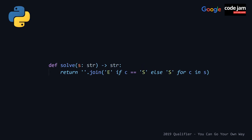Moving on to the Python solution, here we can use the join method with a generator expression to basically say that for each character c in our string s, we want to turn 'S' into 'E', otherwise turn 'E' into 'S'. The equivalent of the ternary operator in Python is the expression: x if condition else y.